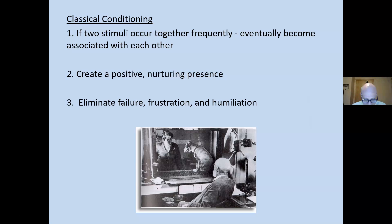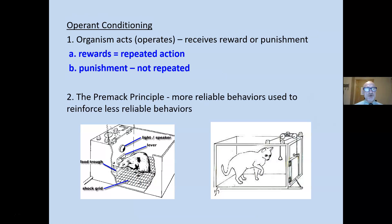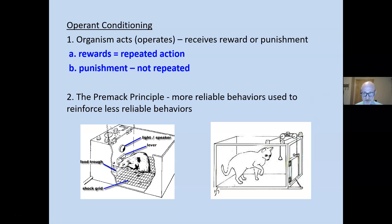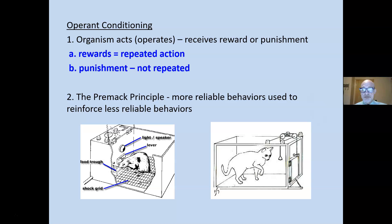Operant conditioning: the organism is acting upon or operating upon reality, then receives a reward or punishment. Rewards make the action more likely to be repeated; punishment makes it less likely. What is of interest here is the Premack principle: more reliable behaviors can be used to reinforce less reliable behaviors. Find what students like to do and use that to reinforce the behaviors you want to see. For example, middle school students like talking to each other — when they get done with their homework, they can talk in small groups. That's the Premack principle. Things students like to do intrinsically — you don't always have to give rewards, prizes, and presents.